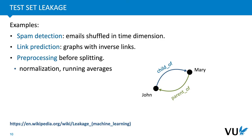Another problem that often happens is test set leakage — we think we're using a test or validation set properly, but information the model shouldn't have access to in a realistic setting is leaking into training or evaluation. For example, in spam detection, if emails were shuffled before splitting without regard for time, an email we trained on might be in the future relative to an email in the test set. This is an unrealistic advantage. The fix is to leave emails in order, split at a particular point in time, and train on the past and test on the future.